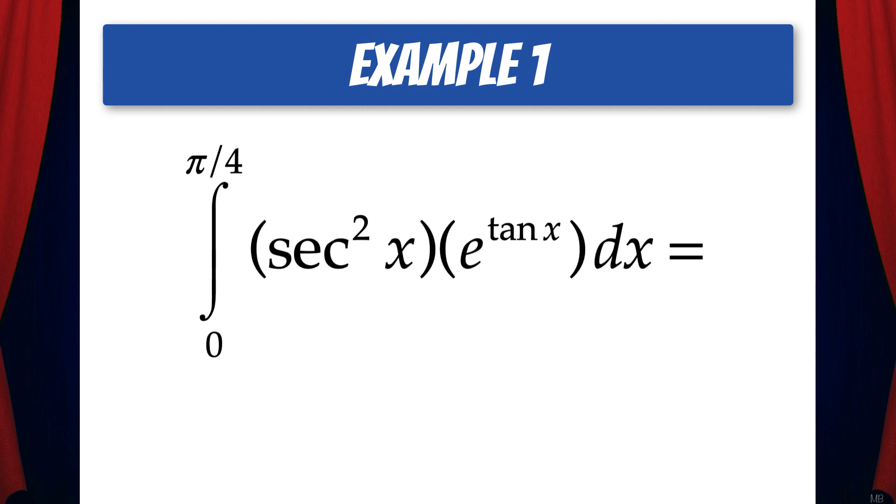Let's look at some examples. Suppose we want to find the integral from 0 to pi over 4 of secant squared x times e to the tan x dx. The first thing to notice is that secant squared x is the derivative of tangent x. That means we can use u-substitution.